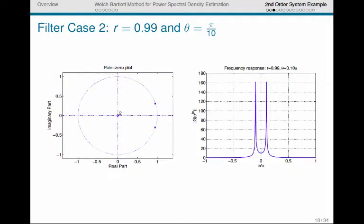We'll consider one more case, case two, where all we do is move those poles closer to the unit circle. When we do that, that creates much larger peaks in the frequency response of the filter. So these peaks now go up to about 160, and they're very narrow because these poles are very close to the unit circle. So these are the two cases that we're going to consider for our power spectral density estimation problem.